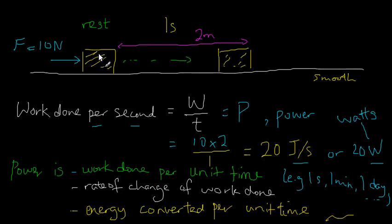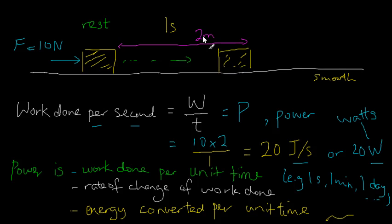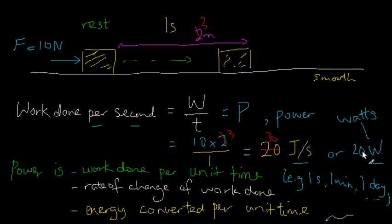We have seen that in this example, if I push the box with a force of 10 N over a distance of 2 meters in one second, we can calculate the power by taking the work done over the time taken, and the answer is 20 watts. Now, what if the distance moved is 3 meters instead? Then the work done would be 10 N times 3 meters, divided by the same time, so the answer should be 30 watts.